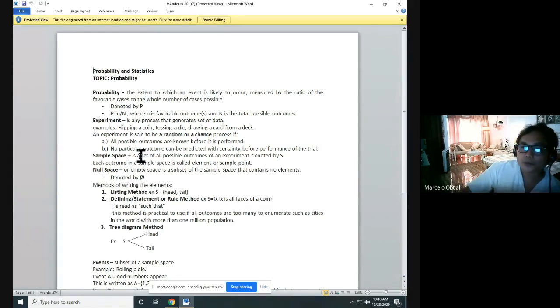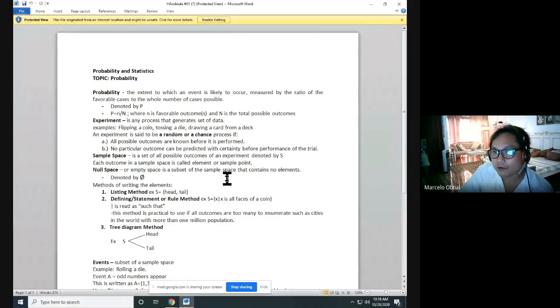Number two, no particular outcome can be predicted with certainty before performance of the trial. It means to say there should be no bias when you're doing the experiment.